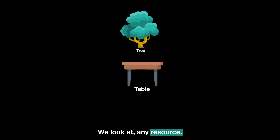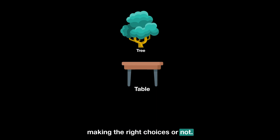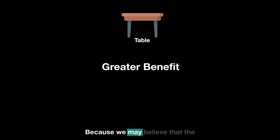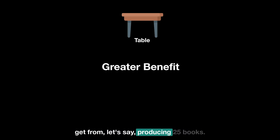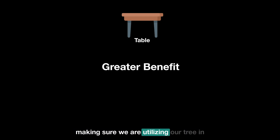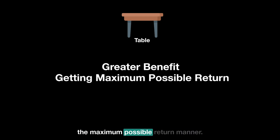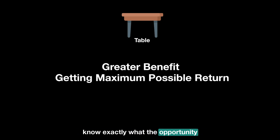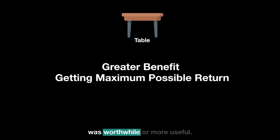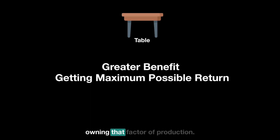We look at any resource or resource allocation through the lens of opportunity cost to understand whether we are making the right choices. We may choose the table over 25 books because we believe the benefit from producing a table is greater. By identifying the opportunity cost, we ensure we are utilizing our resource for the maximum possible return — weighing options to choose what is most worthwhile for the individual, the economy, or whoever owns that factor of production.